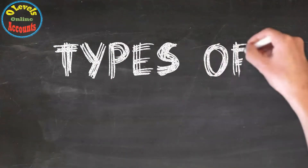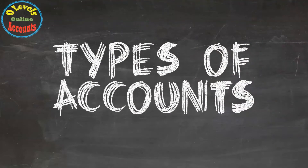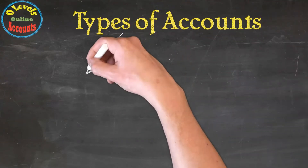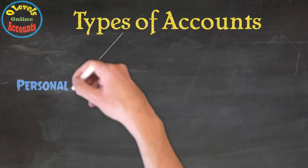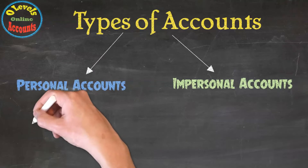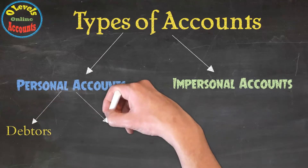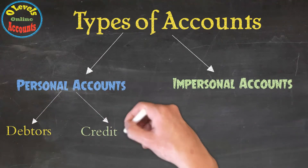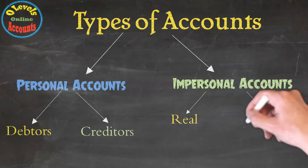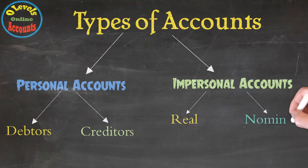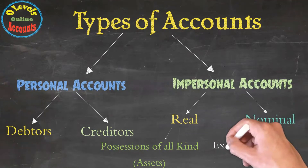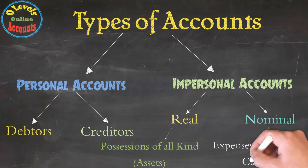How many types of accounts are there? There are two major types of accounts: Personal Accounts and Impersonal Accounts. Personal Accounts consist of debtors and creditors. Impersonal Accounts have two further divisions: Real and Nominal. Real Accounts relate to possession of all kinds in business, such as assets. Nominal Accounts are used for expenses, income, and capital.